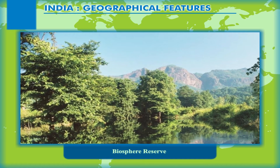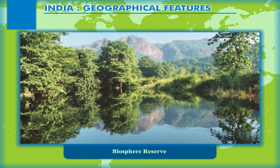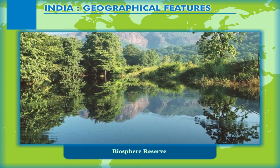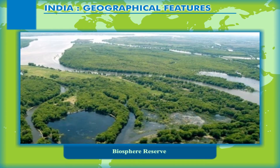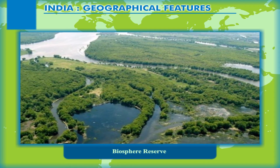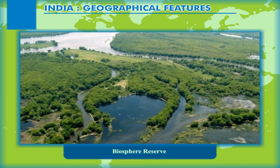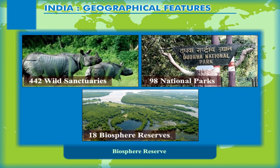Ten of the 18 Biosphere Reserves in India are part of the World Network of Biosphere Reserves based on the UNESCO Man and the Biosphere (M.A.B.) program list, combining many different approaches in a vast diversity of policy and management fields towards a balanced relationship between mankind and nature. Around 442 wildlife sanctuaries, 98 national parks, and 18 biospheres are spread all over India with the sole aim of protecting wildlife species.